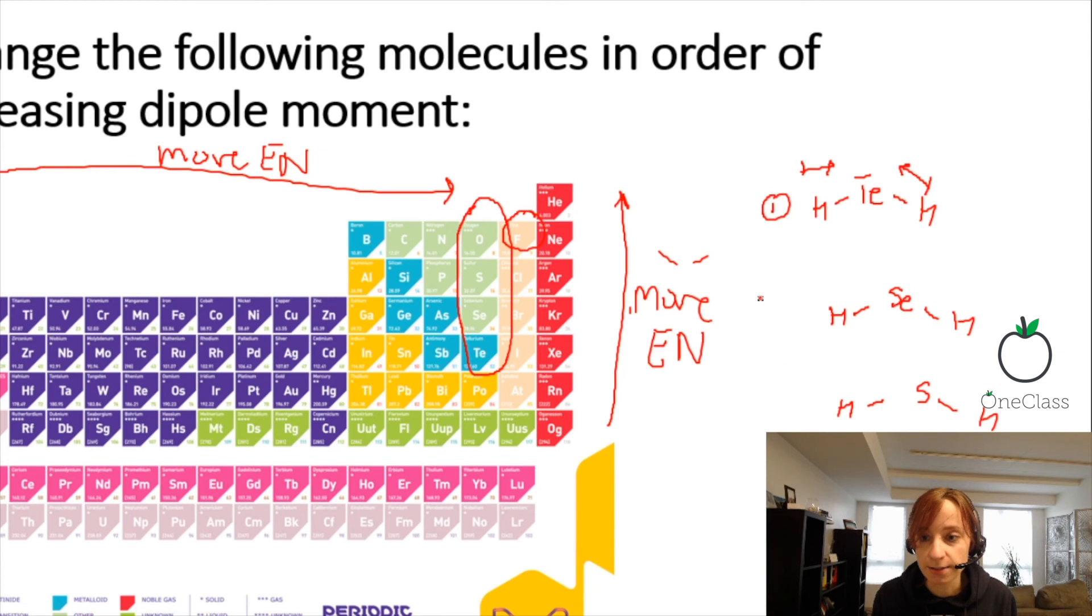Tellurium is going to have the least dipole moment because it is at the bottom of the periodic table. In the four we are looking at, selenium is second, sulfur third, and H2O fourth. Oxygen is the most electronegative atom in the series.